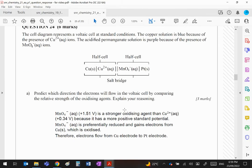It says predict the direction of the electron flow. Well obviously copper is the one giving up the electrons, so effectively copper will be the way where the electrons are generated and they'll flow from the copper half cell over to the manganate half cell.